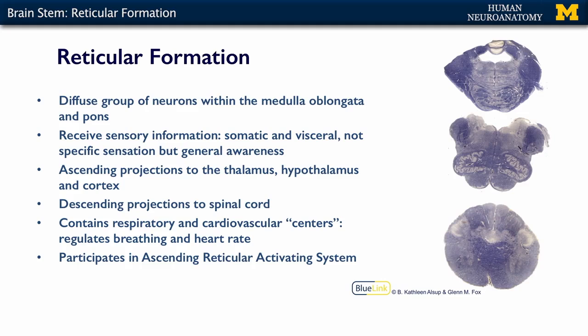The reticular formation is a very diffuse group of neurons that lives within the medulla oblongata and the pons. They're not formed into any specific clusters — they're loose aggregations of cells within the medulla and the pons. They receive sensory information, both somatic, from your surface, and visceral, from your internal organs. They don't receive very specific information — not a precise pain location or a specific touch — but they have a general awareness that something's going on.